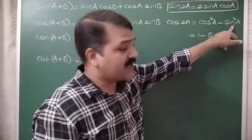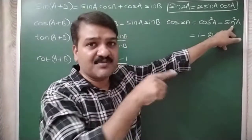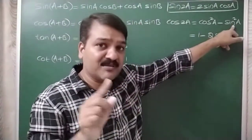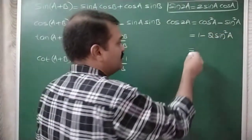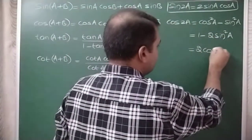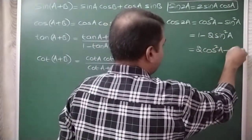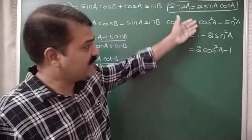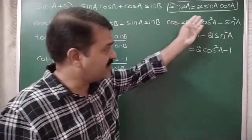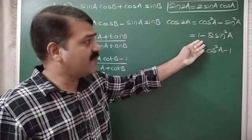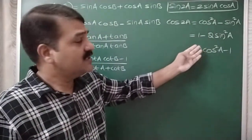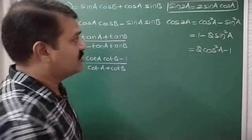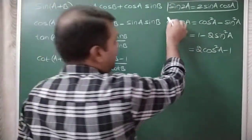Similarly, if we write sin²A as 1 − cos²A in the formula, substituting gives cos2A = 2cos²A − 1. This is the formula for cos2A completely in terms of cos. So we have three equivalent forms of cos2A: cos²A − sin²A, 1 − 2sin²A, and 2cos²A − 1.